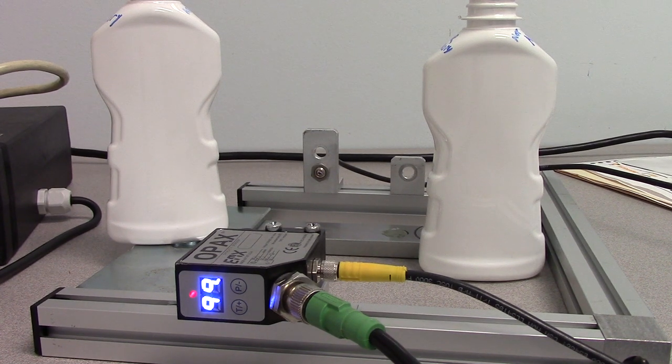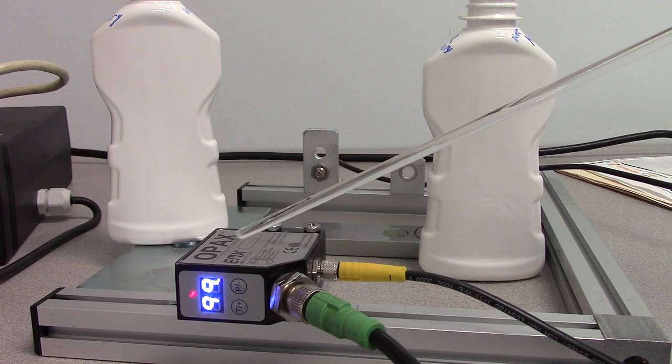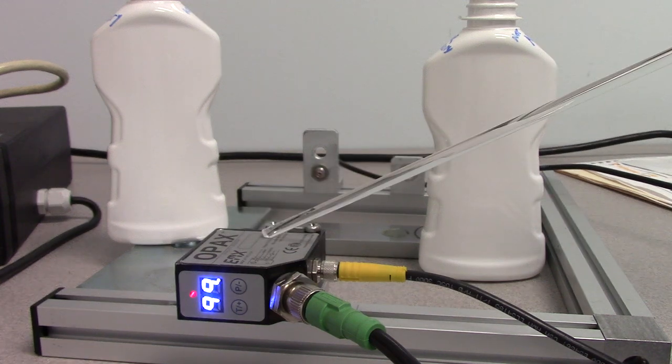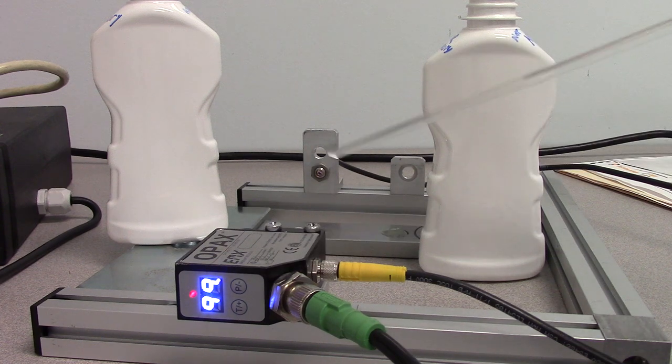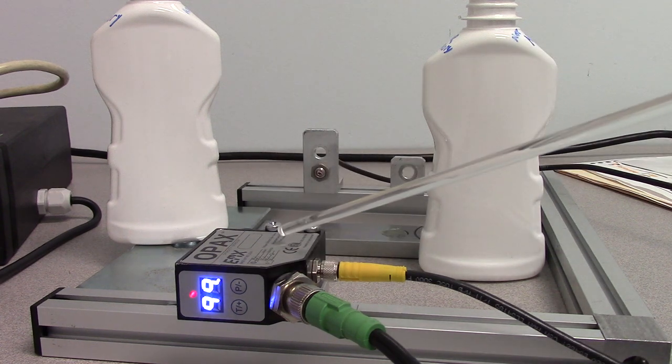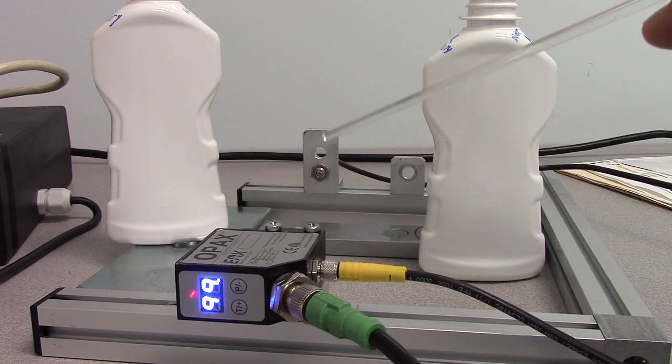This is a demonstration of the OPACS Opacity Sensor from EMX Industries. The sensor features a control unit receiver with a display of 0 through 99, which is an indication of the light transmission or relative light transmission through the sample material.